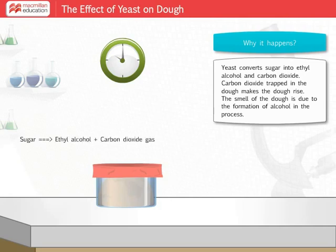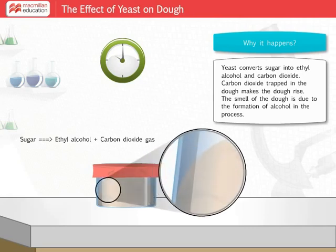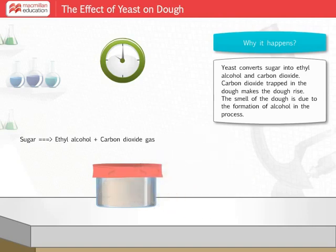Yeast undergoes anaerobic respiration and converts sugar into ethyl alcohol and carbon dioxide. Carbon dioxide gets trapped in the dough and makes it rise up. As more and more carbon dioxide is produced, the dough rises even more. You will also get a smell of alcohol from the dough, as alcohol is produced in the process.